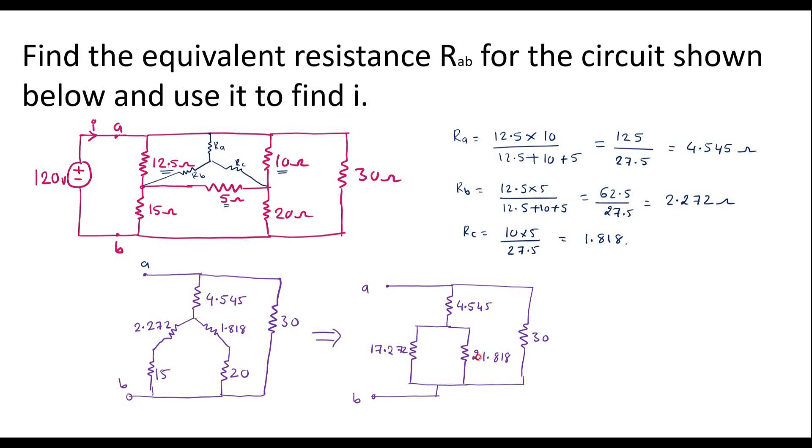Now these two are in parallel, and that combination will be in series with this. Further, I will reduce this circuit as 4.545 ohm. So here, this resistor and this resistor are in parallel. The equivalent value can be calculated by taking product of these two divided by sum of these two.